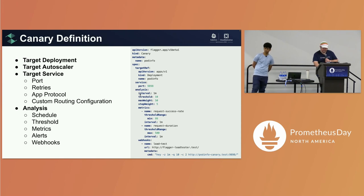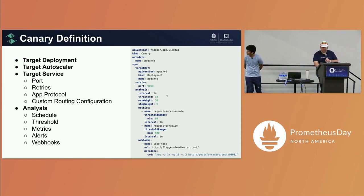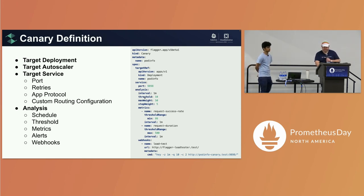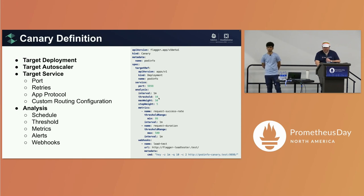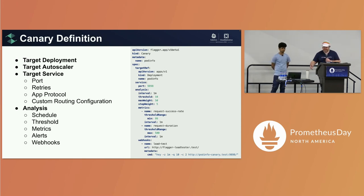In the analysis section there's an interval, and a threshold — which is unfortunately named — this is the number of failures allowed before we eventually land at a rollback decision.